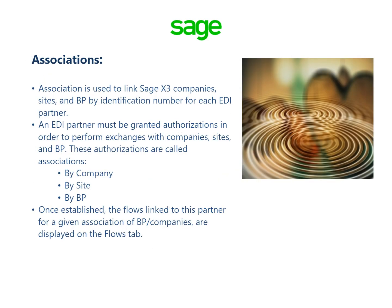Association is used to link SAGE X3 companies, sites, and BPs by identification number for each EDI partner. An EDI partner must be granted authorizations in order to perform exchanges with companies, sites, and BPs. These authorizations are called associations, and they are organized by company, by site, and by BP. Once established, the flows linked to this partner for a given association of BP companies are displayed on the flows tab.